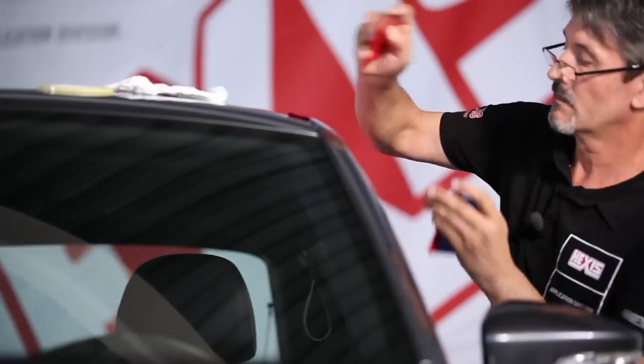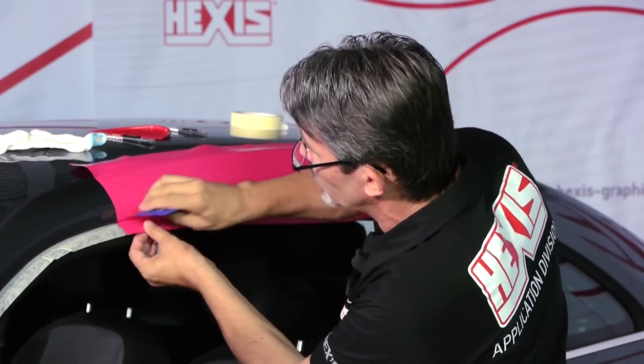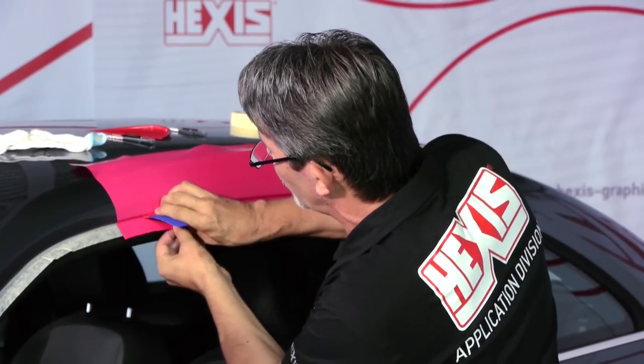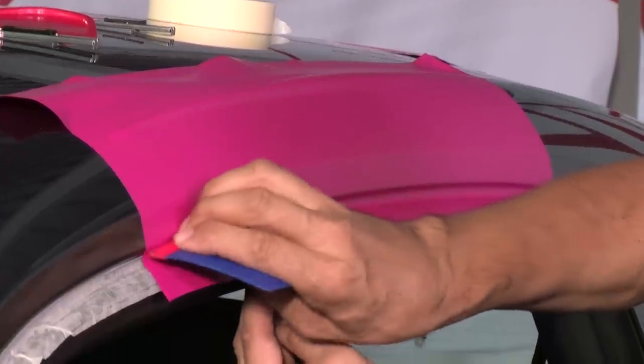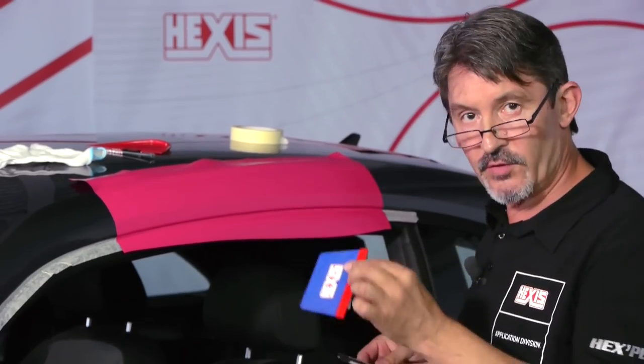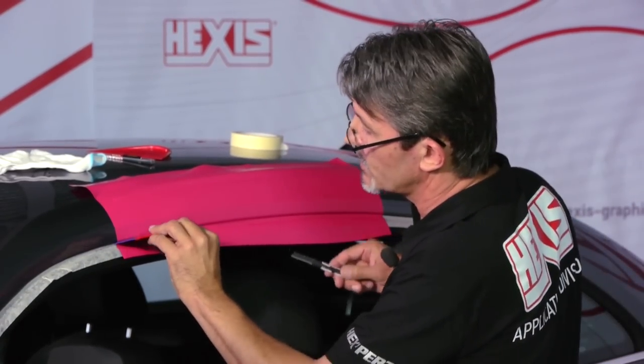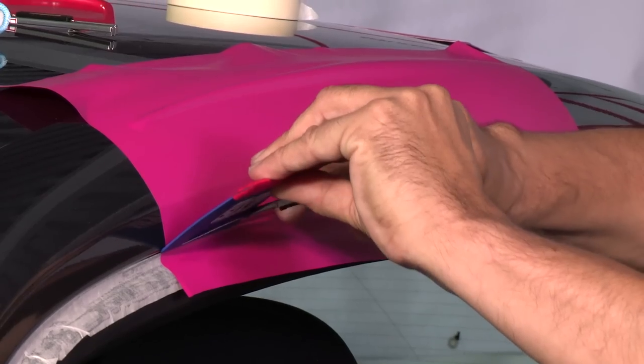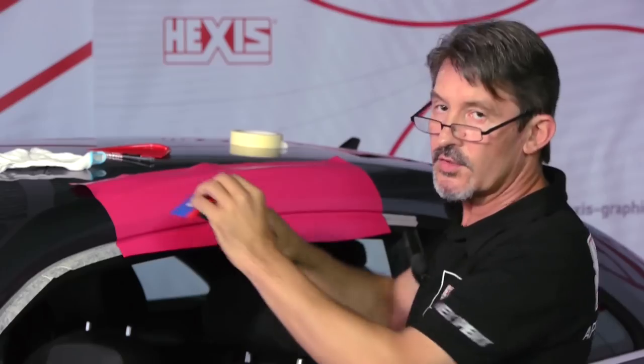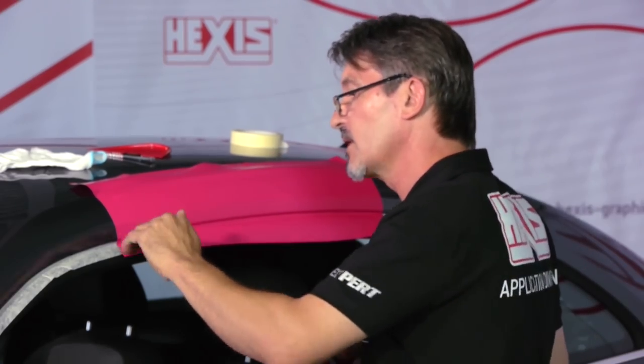We apply the vinyl. With the help of a squeegee we lift it off to follow exactly the edge of the seal. Then we're going to use the squeegee like this with the knife flat on the squeegee. This will allow us to gain a millimeter or so to get it properly inside.